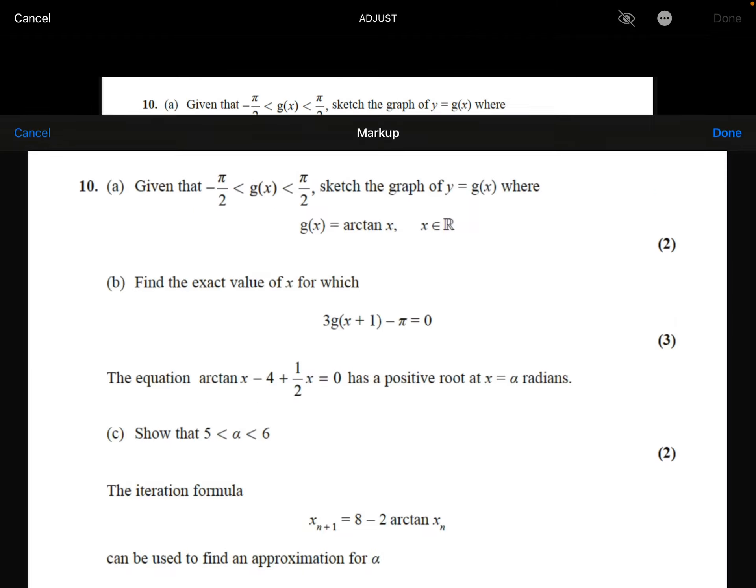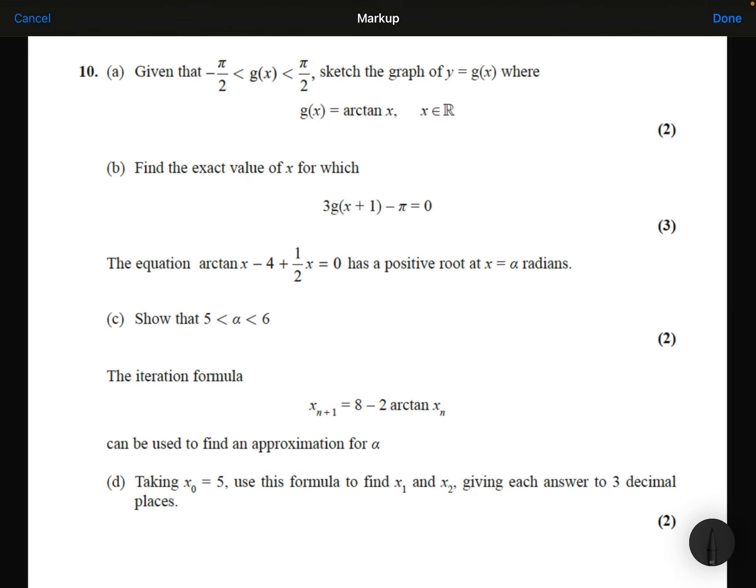We are then told that the equation arctan x minus 4 plus 1 half x equals 0 has a positive root at x equals alpha. I need to show that alpha is between 5 and 6. So if I do arctan 5 minus 4 plus 1 half times 5, let me put that into my calculator.